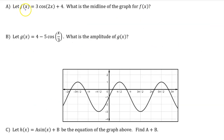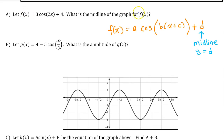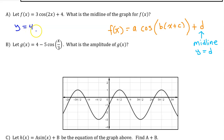Part A. Let f(x) equal 3 times the cosine of 2x plus 4. What is the midline of the graph for f(x)? Given a cosine function with transformations a, b, c, and d, the midline will always be y equals d. So in this case, the midline is y equals 4.